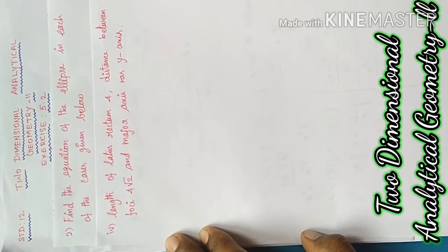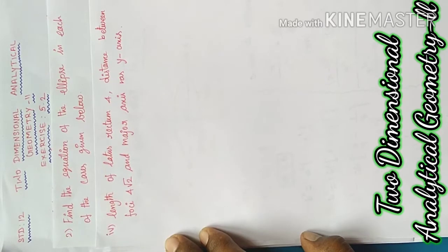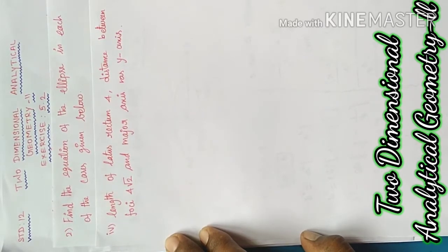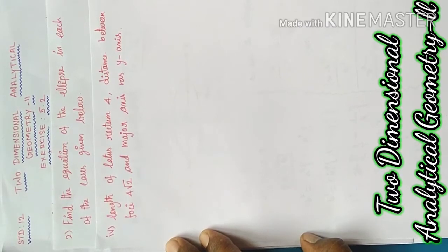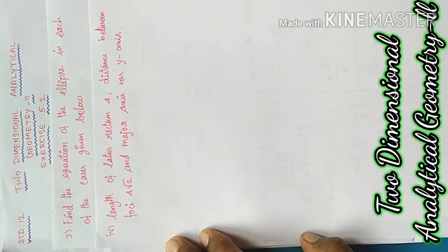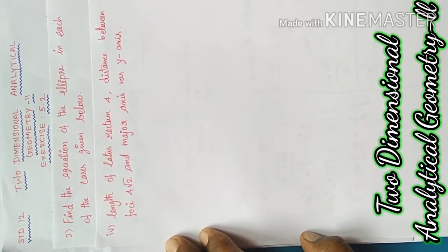Good morning students. Today, 12th standard, chapter name: 2-dimensional analytical geometry part 2, exercise 5.12, second sum. Find the equation of the ellipse in each of the cases given below.